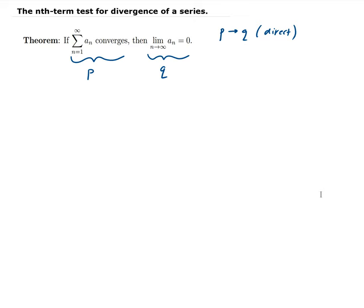One thing to note about this is that the converse of this theorem is not true. The converse is that if you just reverse the direction of the arrow — Q would imply P. That is what we call the converse statement.